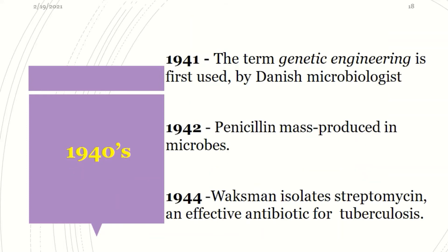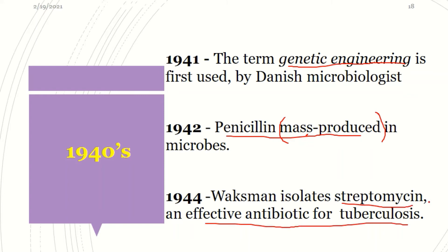Now in the 1940s, we have development of more advanced techniques, for example genetic engineering by Danish microbiologists. We also had penicillin being produced in mass quantities using microbes, which we will look at as recombinant DNA technology. We had advances in other antibiotics — for example, streptomycin for tuberculosis. So in the 1940s, biological systems and biotechnology had really improved.